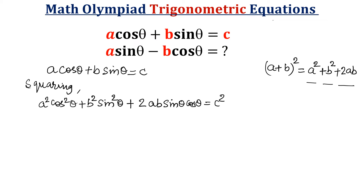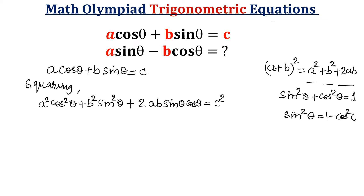Now I am going to use one trigonometric identity: sin²θ plus cos²θ is equal to 1. From this equation I can write sin²θ is equal to 1 minus cos²θ, and cos²θ is equal to 1 minus sin²θ. So there are sin² and cos² terms that we need to replace.